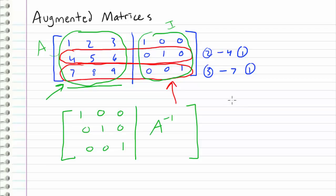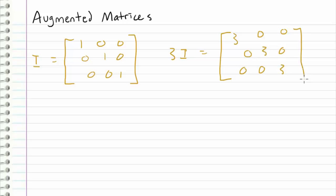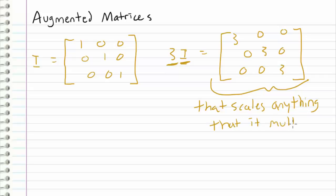So let me illustrate that example. This is the identity matrix, and if I were to multiply the identity matrix by three, what I would get is [3, 0, 0 / 0, 3, 0 / 0, 0, 3], because we just multiply every single component by the scalar three. So what I have done here is applied the operation of scalar multiplication to the identity matrix, and what I'm left with is a matrix that scales anything it is multiplying by a factor of three.